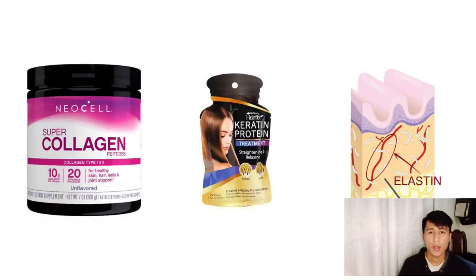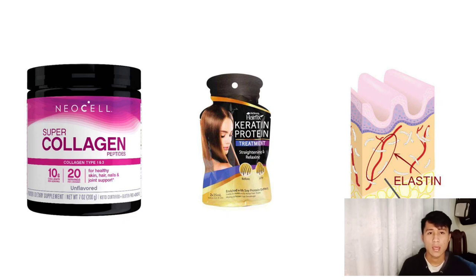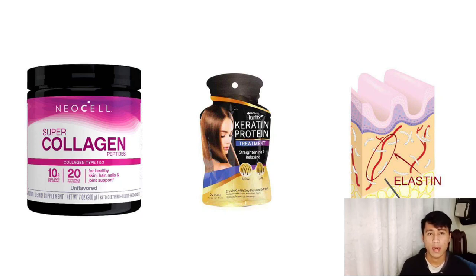One of the most well-known structural proteins is collagen, which makes up about a third of all proteins in the human body. It is a fibrous protein that provides strength and support to tissues such as skin, tendons, ligaments, and bones. Another example is elastin, which provides elasticity to tissues like the lungs and skin. Keratin is the primary structural component of hair and nails, providing strength, toughness, and resistance to abrasion.